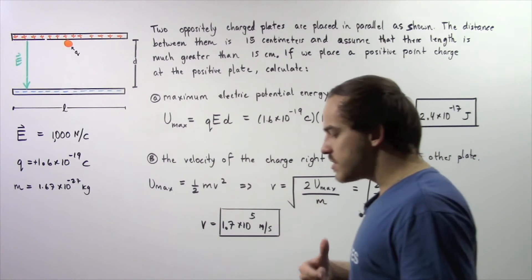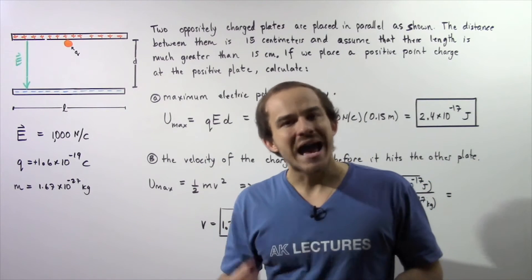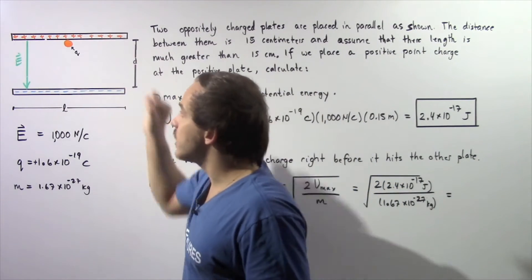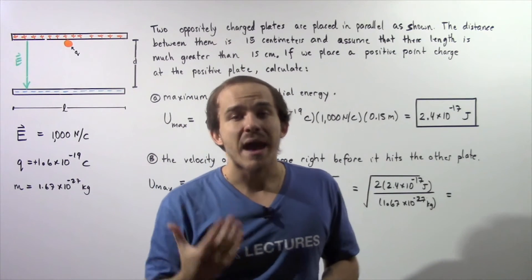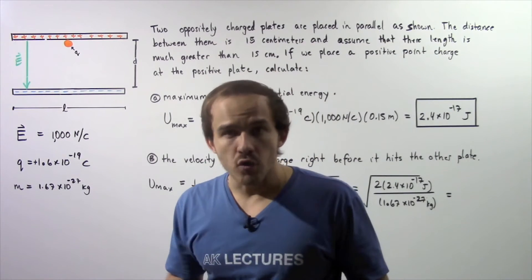We want to determine the maximum electric potential energy. Where exactly is the maximum potential energy located? Our object, the electric charge, has a maximum electric potential energy right before it begins to move.